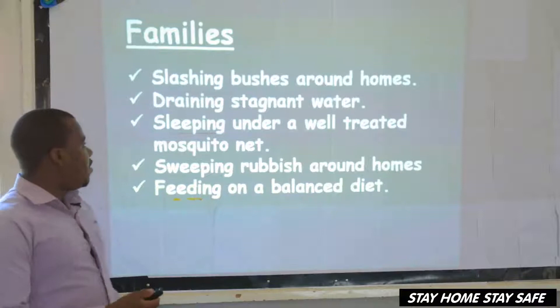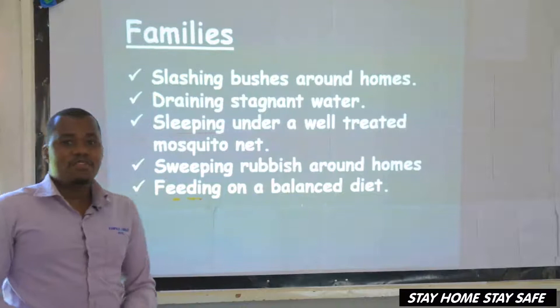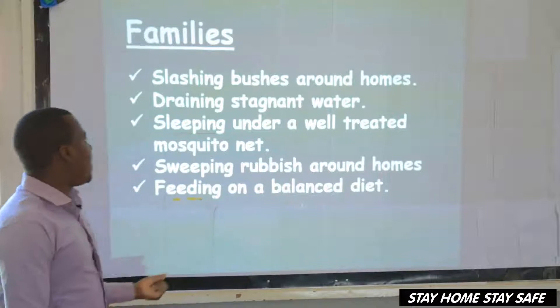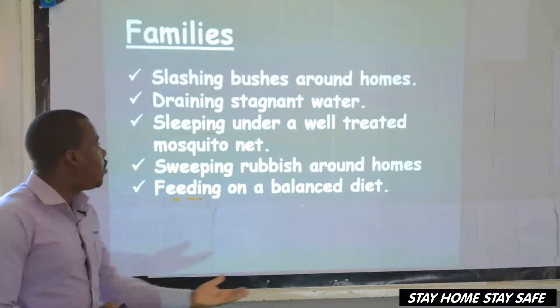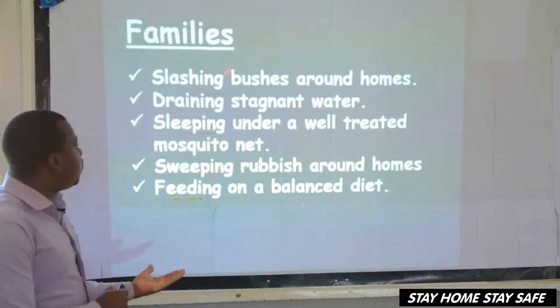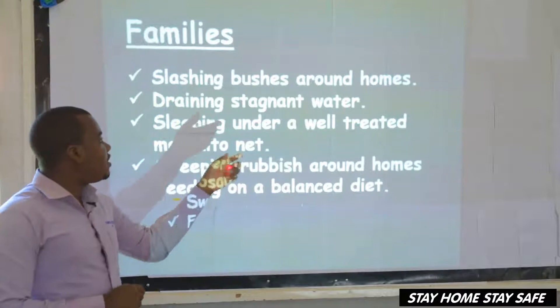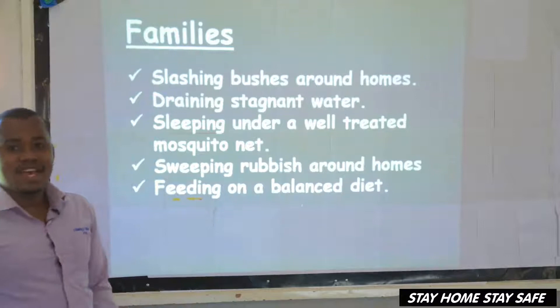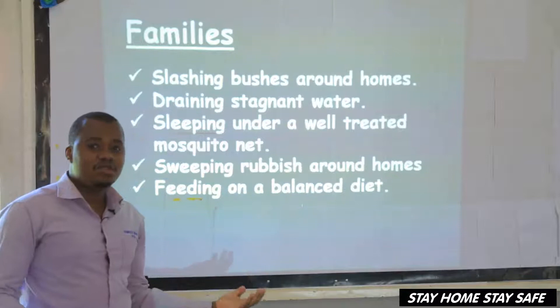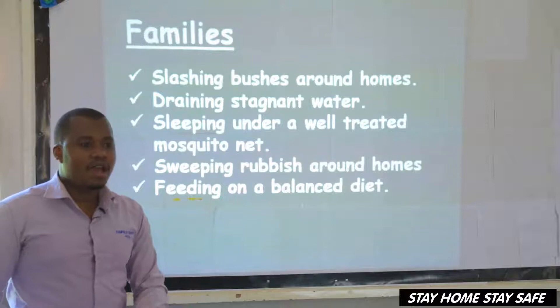What does the family do? What are roles played by the family to promote PHC or primary health care? The family should ensure that bushes around your homes are slashed. Don't leave it to become so bushy, because the bushes are homes of vectors — vectors will breed from there and then come into the house to disturb you like mosquitoes. The family must ensure bushes around the homes are cut short by slashing them.